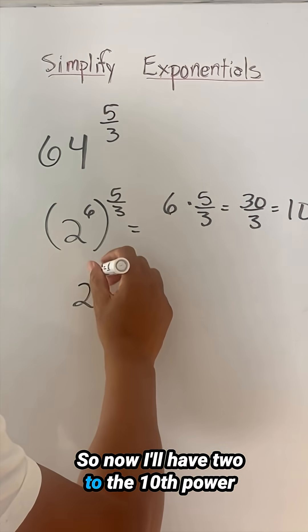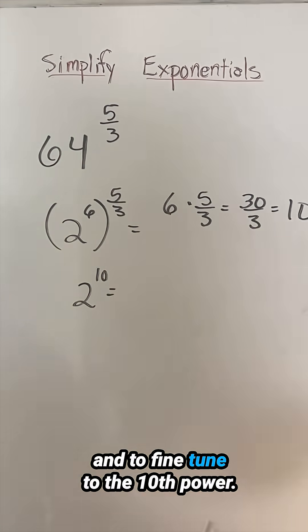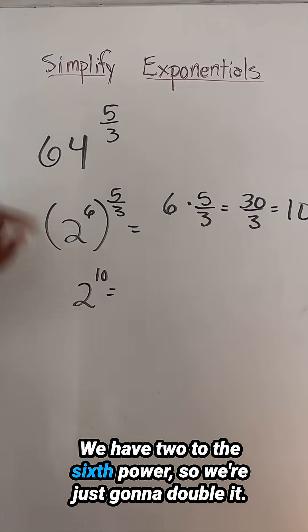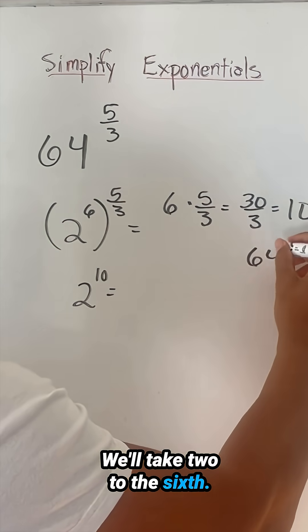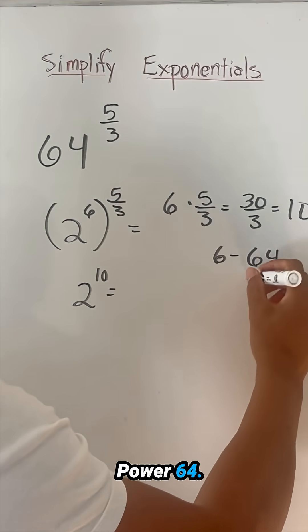So now I'll have two to the 10th power, and to find two to the 10th power, we have two to the sixth power, so we're just going to double it. We'll take two to the sixth power, that's 64.